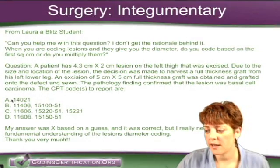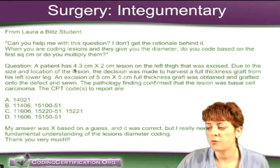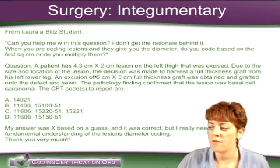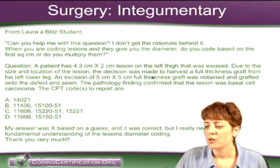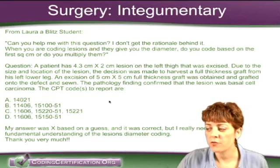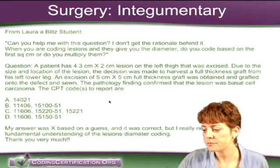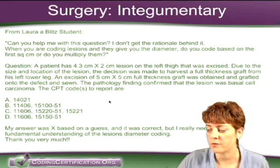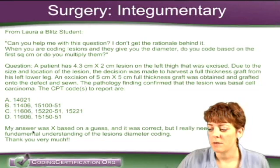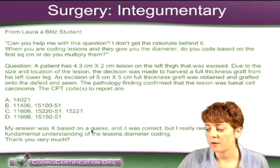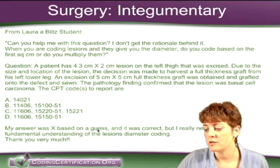This must be from a practice exam. The question reads: a patient has a 4 by 3 centimeter times 2 centimeter lesion on the left thigh that was excised. Due to the size and location of the lesion, the decision was made to harvest a full thickness graft from the lower left leg. An excision of 5 centimeters by 5 centimeters full thickness graft was obtained and grafted onto the defect and sewn. The pathology finding confirmed that the lesion was basal cell carcinoma. She changed her answer to C based on a guess and it was correct, but she really needs a fundamental understanding of the lesion diameter coding.